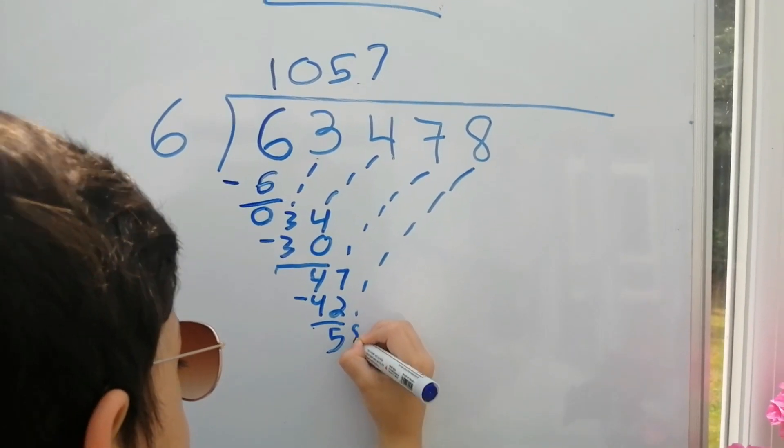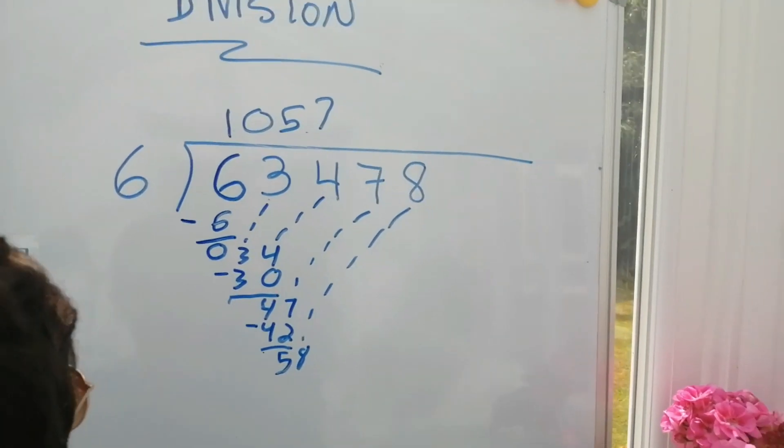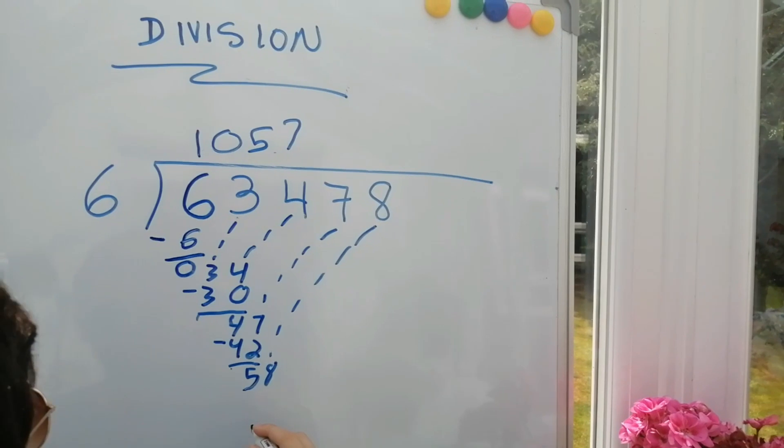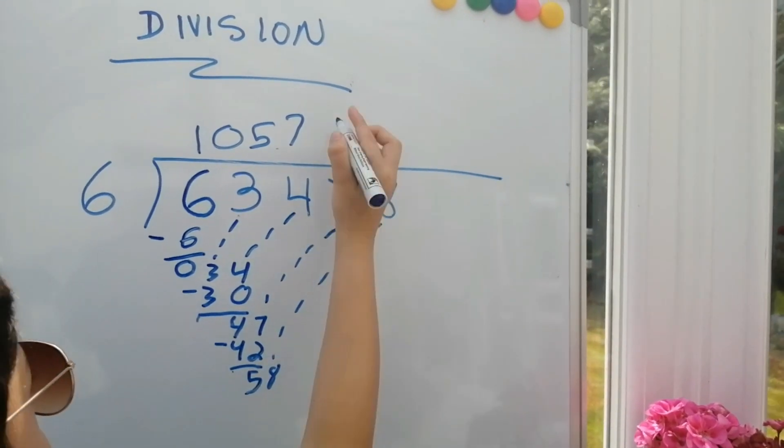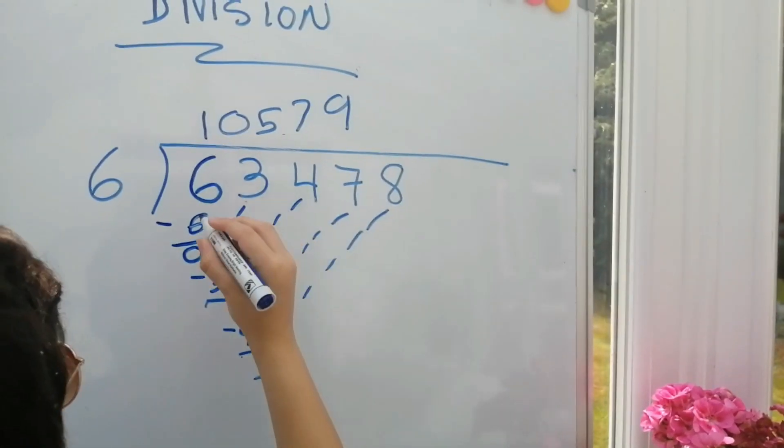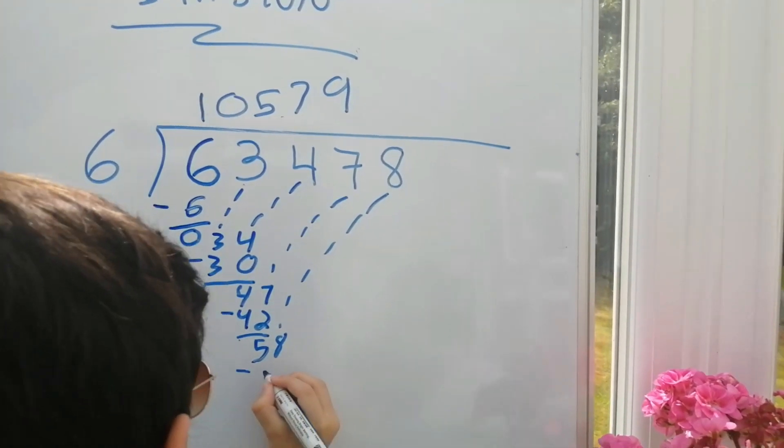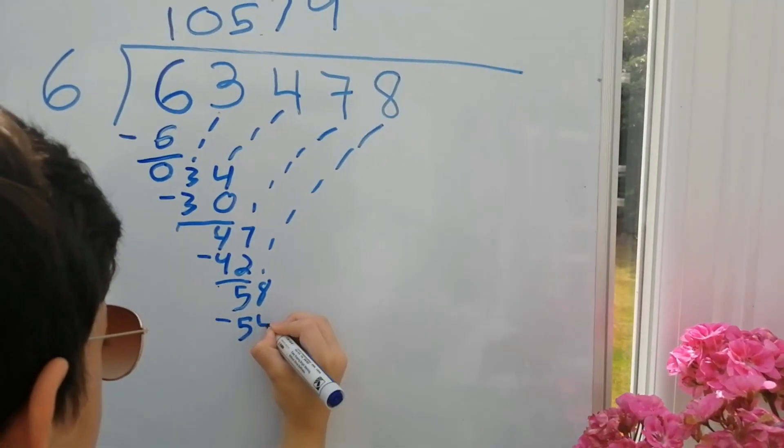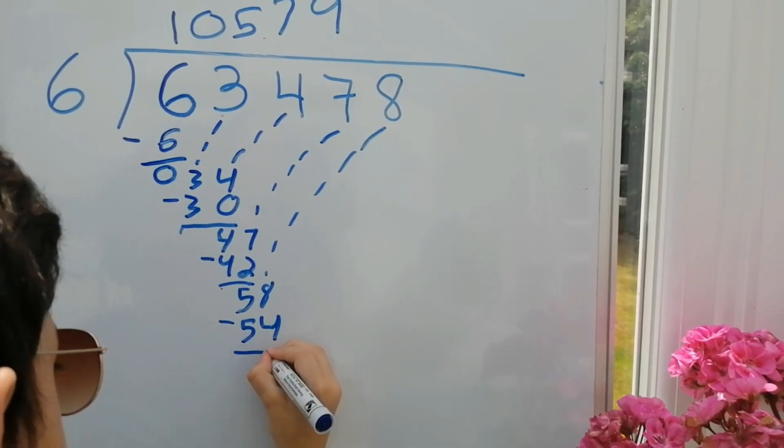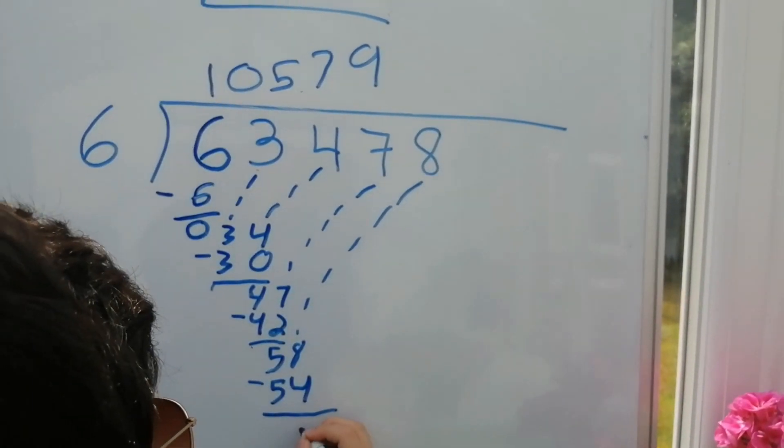Eight. Six into fifty-eight is nine. Six times nine equals fifty-four. Fifty-eight minus fifty-four equals four.